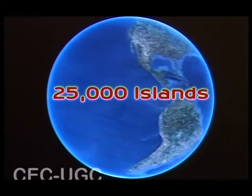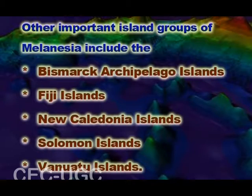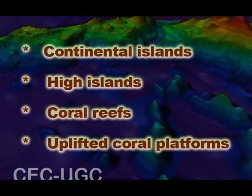The Pacific Ocean contains about 25,000 islands, more than the total number of islands found combined in all other parts of the world. The majority of these islands are found south of the equator. In the southwestern corner of the Pacific lie the islands of Melanesia, dominated by New Guinea, with other important island groups including the Bismarck Archipelago, Fiji, New Caledonia, the Solomon Islands, and the Vanuatu Islands. Islands in the Pacific are of four basic types: continental islands, high islands, coral reefs, and uplifted coral platforms.